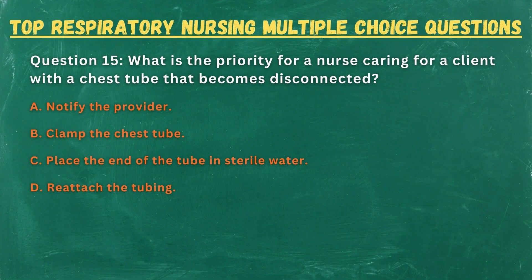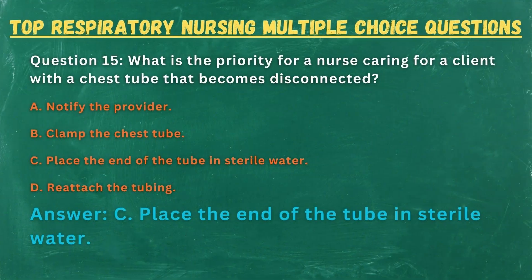Question 15. What is the priority for a nurse caring for a client with a chest tube that becomes disconnected? A. Notify the provider. B. Clamp the chest tube. C. Place the end of the tube in sterile water. D. Reattach the tubing. Answer: C. Place the end of the tube in sterile water.